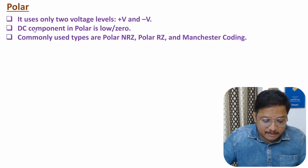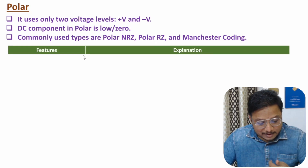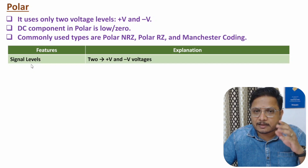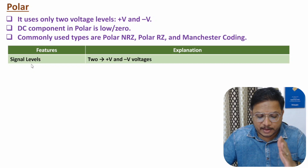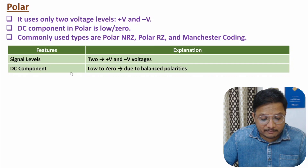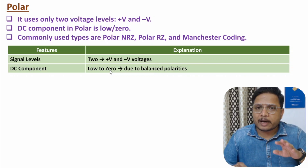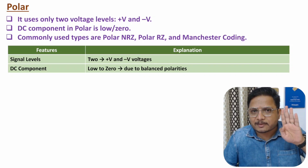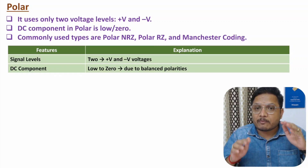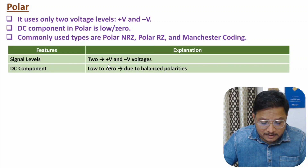Commonly used types are polar NRZ, polar RZ, and Manchester coding. I'll explain all these techniques along with waveforms in future videos. In terms of features: signal levels are two — plus V and minus V. DC component will be low to zero; it will be low in case you have more ones and fewer zeros, but if you balance the number of ones and zeros, then DC component may go towards zero.